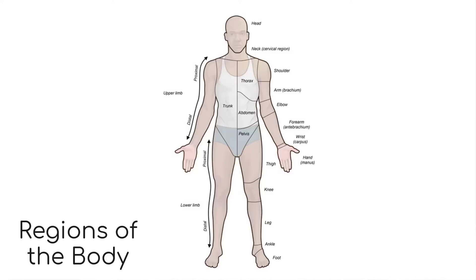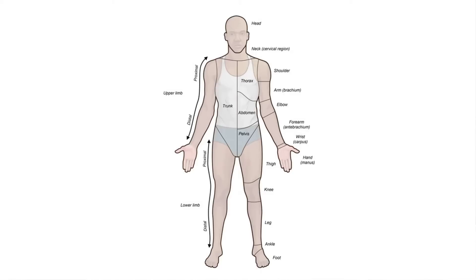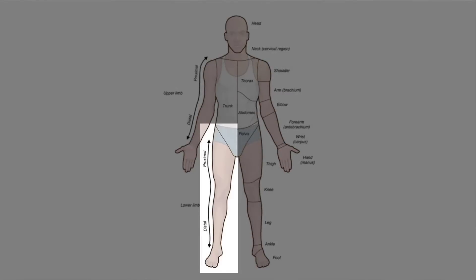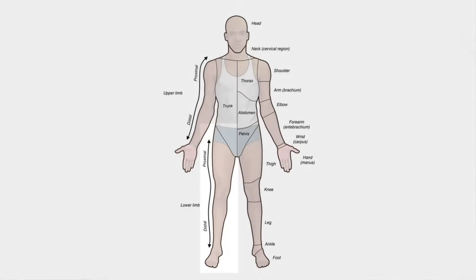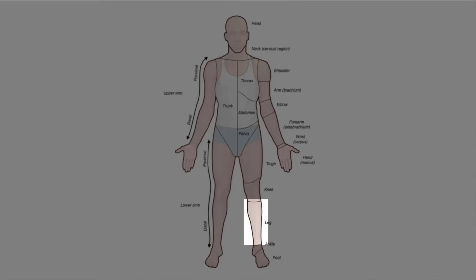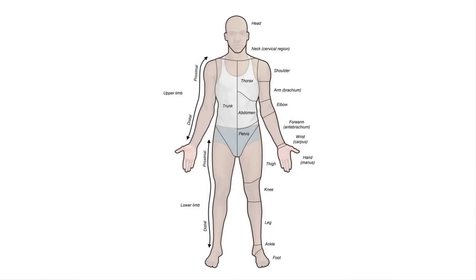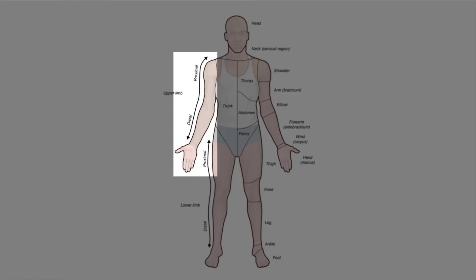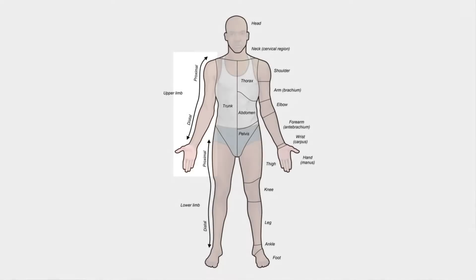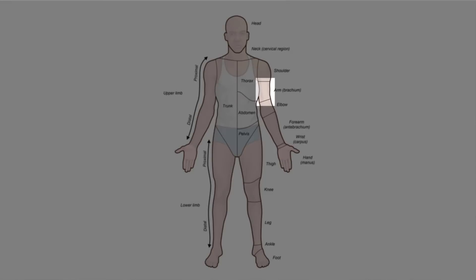Another way to divide the body is to break it down into regions. There are some important distinctions to note between anatomical and everyday language. Most people refer to the area between their hip and foot as the leg, but in anatomy we call this the lower limb, with the leg being a specific area between the knee and the ankle. Similarly, most people call the area from their shoulder to their hand their arm, but in anatomy this is the upper limb, and the arm is only found between the shoulder and the elbow.